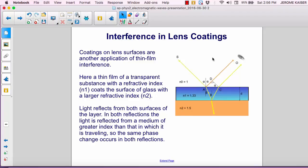Light reflects from both surfaces of the layers. In both reflections, the light is reflected from a medium of greater index than that in which it is traveling. So the same phase change occurs in both reflections.